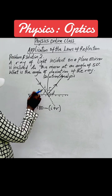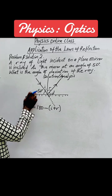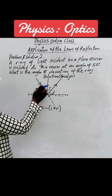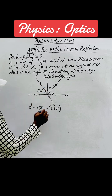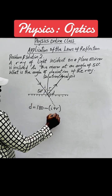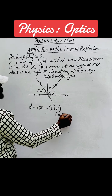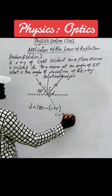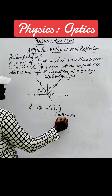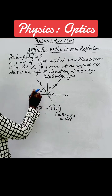Now this is 50 degrees inclined to the mirror, so the incident angle i will be equal to 90 minus 50, which is 40 degrees — a complementary angle.